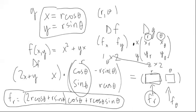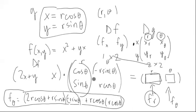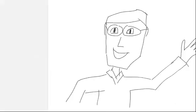To get f_theta, we just switch to the second column of dg instead. So it becomes (2x + y) times negative r sine theta, plus x times r cosine theta, replacing x and y with their polar forms as before. That's one way you can get a partial derivative with respect to a new variable when you have a coordinate transformation — two variables in, two variables out, and the two-by-two Jacobian matrix still works perfectly. Thanks for watching.